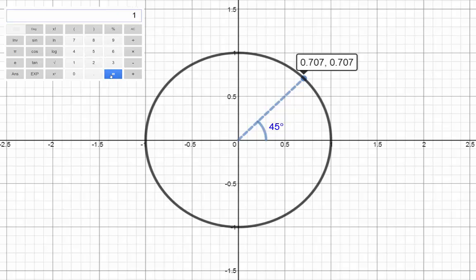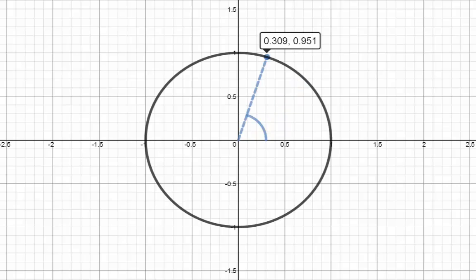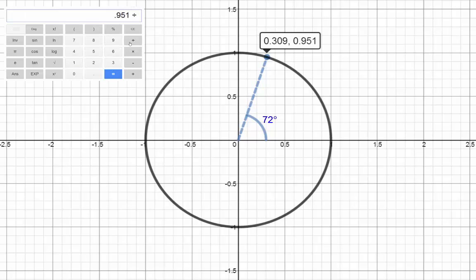The tan value can also go above 1, like with tan 72 degrees. The rise is 0.951, and the run is 0.309, so the tan value is roughly 0.951 divided by 0.309, which is 3.08. You can check this on a calculator.